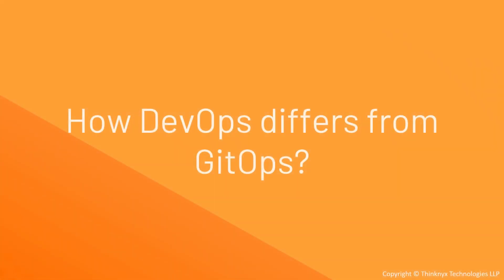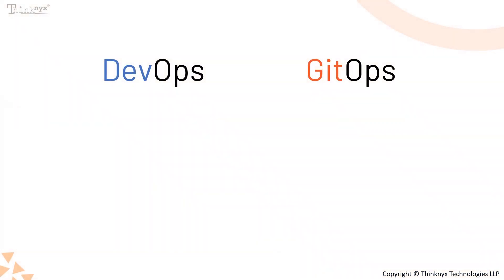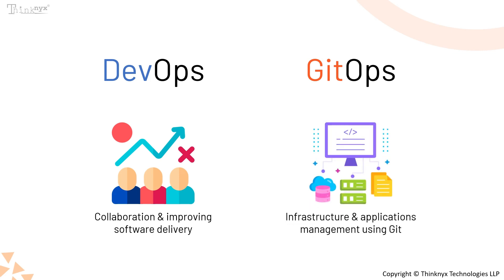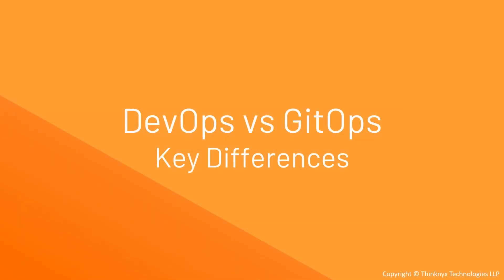But how do DevOps and GitOps differ? In a nutshell, DevOps is a broad philosophy focused on collaboration and improving the entire software delivery process, whereas GitOps narrows this focus to managing infrastructure and applications specifically through Git. Now let's understand the key differences between DevOps and GitOps.